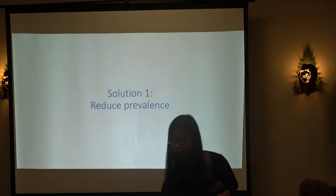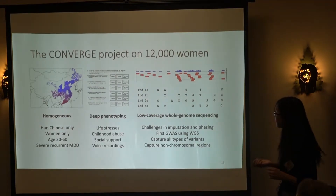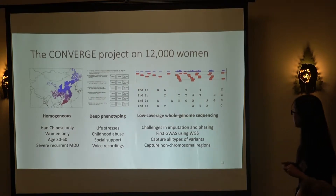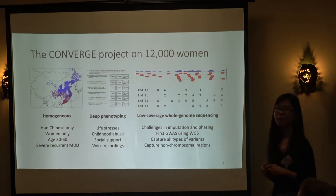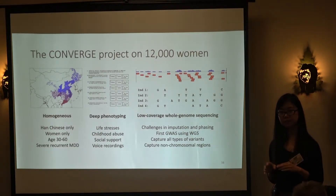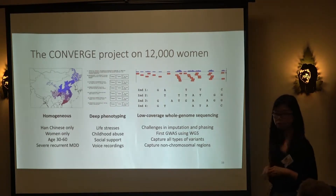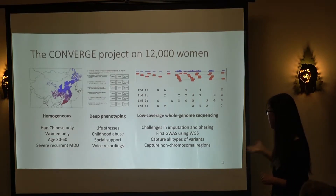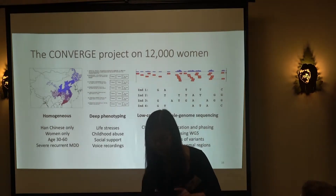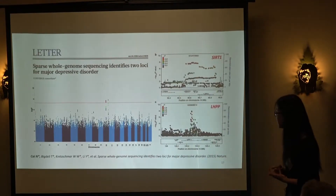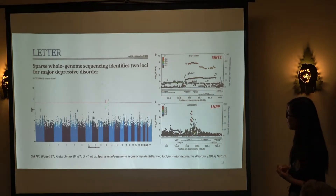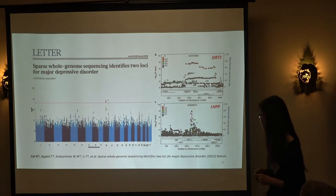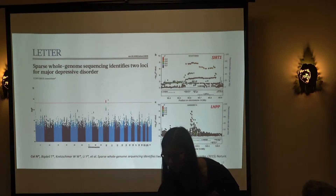Solution one — reducing prevalence — is epitomized by the Converge project, which I was part of during my PhD. Converge studied 12,000 Chinese women: 6,000 cases of extremely severe, recurrent major depressive disorder patients, many of whom were hospitalized, with deep phenotyping including life stresses and childhood abuse, and whole genome sequencing. We collected extremely severe cases, and this strategy seemed to work — it gave us the first two genome-wide significant hits for depression, with nowhere near 50,000 cases and controls.